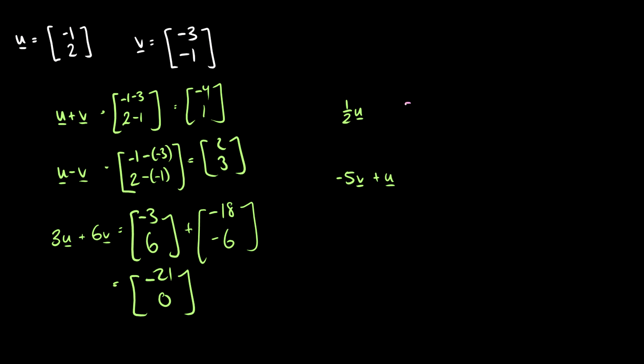Okay, what about a half u? Well, we just take the values of u and divide them by 2. So we end up at negative one half, 1.